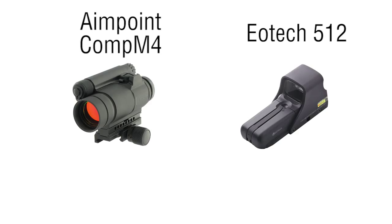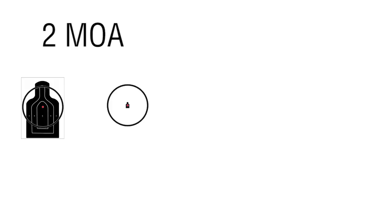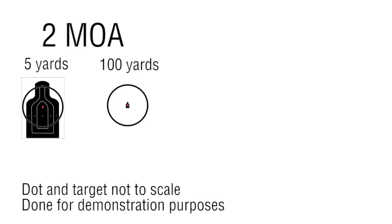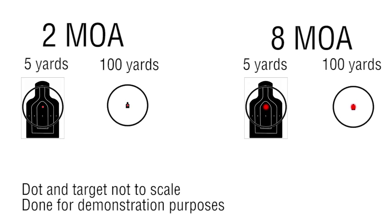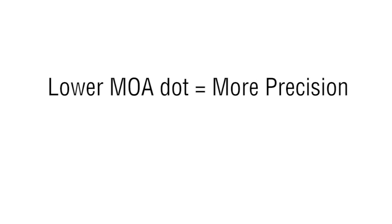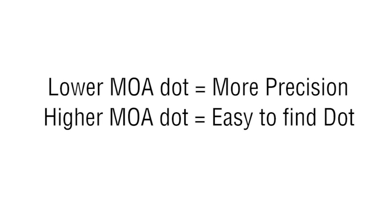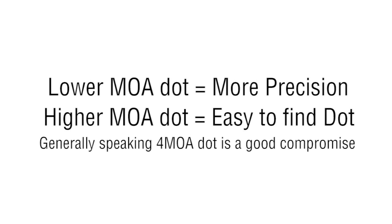MOA has two functions in optics. For red dot scopes, MOA refers to the size of the dot. The dot from a 2 MOA red dot scope will cover 2 inches of the target at 100 yards, and an 8 MOA red dot will cover 8 inches of the target. This is important because a low MOA will allow more precision at longer ranges, but a large MOA will allow easier tracking of the dot.